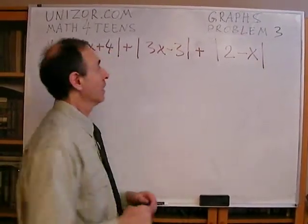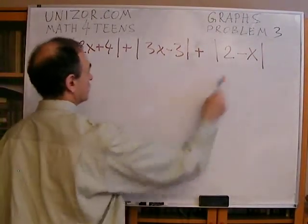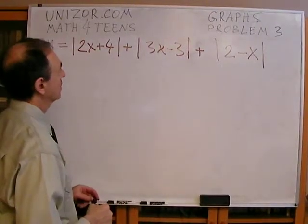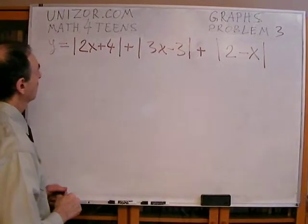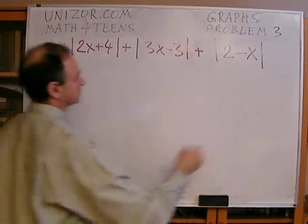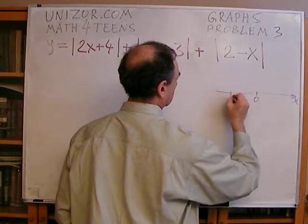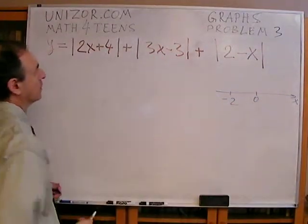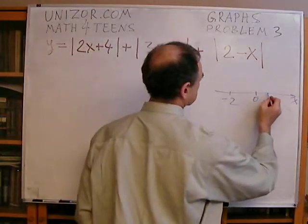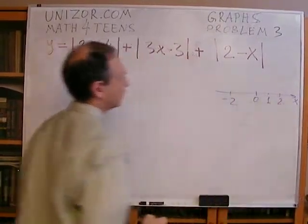Okay. First of all, critical points. Critical points are those points where each of these expressions within the absolute value signs equal to zero. In this particular case, that's x equals to minus two. This one is x is equal to one critical point.